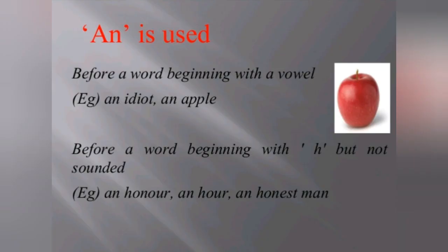An is used before a word beginning with a vowel sound. Vowels means a, e, i, o, u, and the sound of these vowels are a, e, i, o, u. So when a word starts with a vowel sound you can put an before that word.